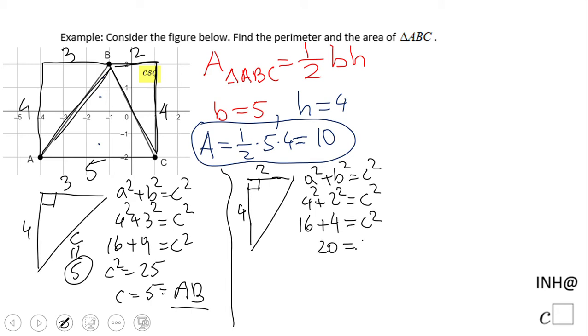And c = √20. Can we simplify this? Oh yeah, 4 times 5 is 20, and the square root of 4 is 2. Okay, 2√5. That is how much BC is.